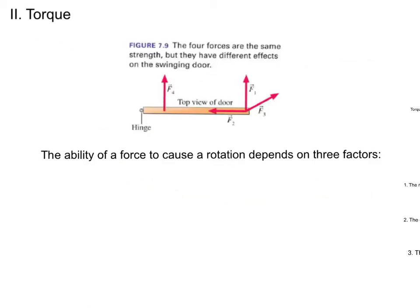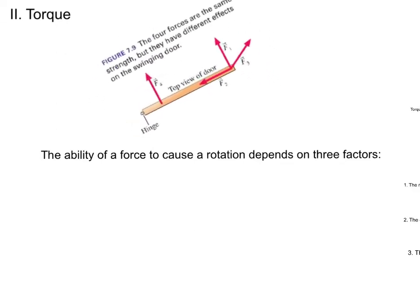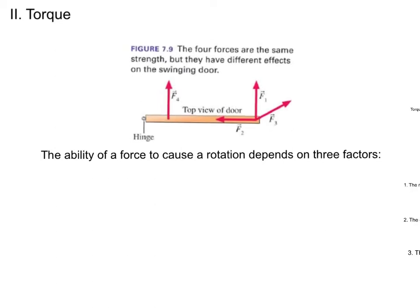Let's think about torque. Here I have a top-down view of a door with four forces acting on it, each of the same strength, but each with different effects. The hinge at the bottom is the pivot point about which the door would rotate. Force one is the most effective for opening the door. Force two pushes straight toward the hinge and will not open the door. Force three will open the door, but not as easily as force one. Force four is perpendicular to the door and the same size as force one, but pushing close to the hinge is not as effective as pushing the outer edge.